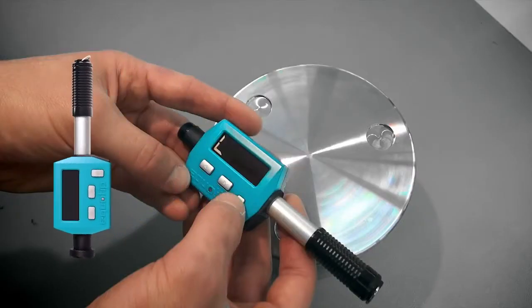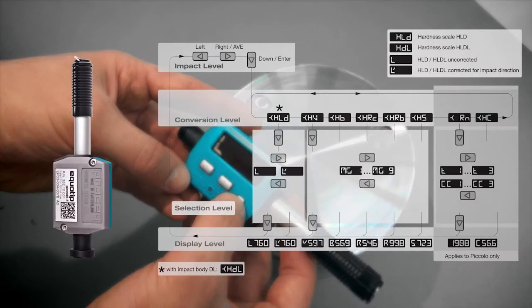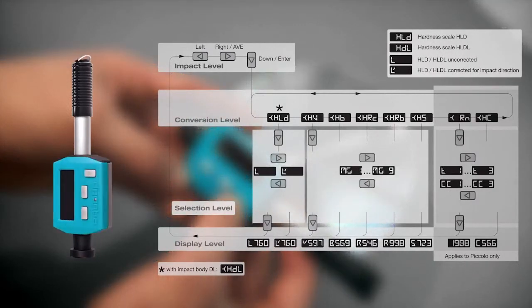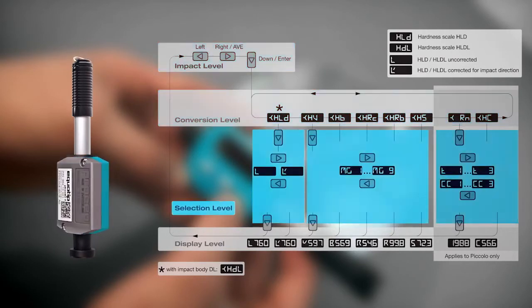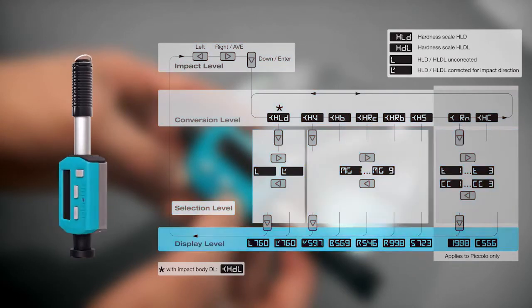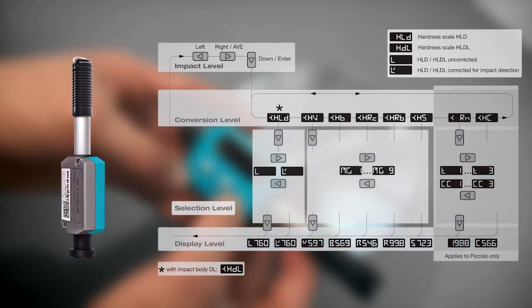To understand how to operate the Ecotip Piccolo, have a look at the following graphic. As you can see, there are four operating levels: the impact, the conversion, the selection and the display level. To navigate within these different levels, press the respective keys.